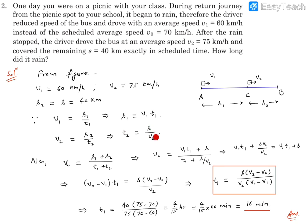s2 divided by t2, so from here t2 can be s upon v2 because s2 is s, s is known to us. Now in normal schedule case the bus would have covered total distance s1 plus s2 and it would have taken t1 plus t2 time because it covers the journey in the